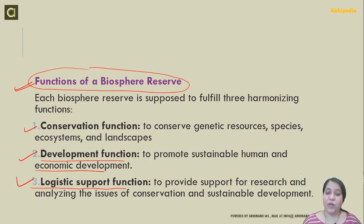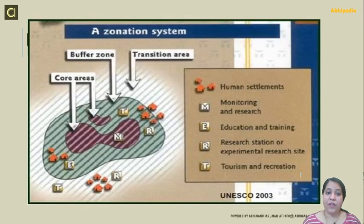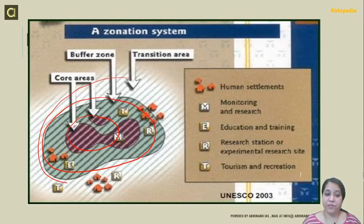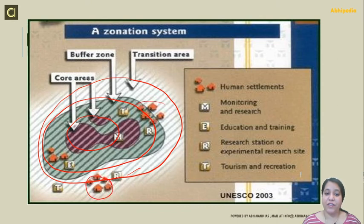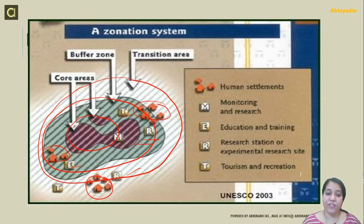The zonation system of a Biosphere reserve consists of three zones. At the center is the core area, then the buffer area surrounds it, and then there is the transition area on the outside. The core area is entirely secured and protected ecosystem contributing to preservation of landscape, ecosystems, species, and genetic variation. The buffer area encompasses or adjoins the core area and is utilized for activities compatible with sound ecological practices — scientific research, monitoring, training, and education. The transition area allows the greatest activity, including tourism and recreational activity in the buffer outline, and human settlements.